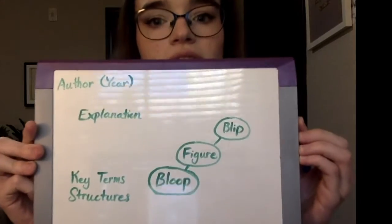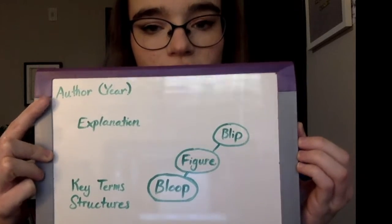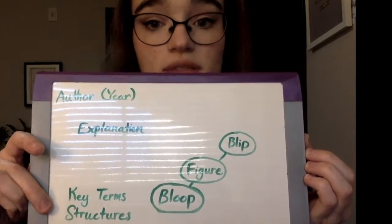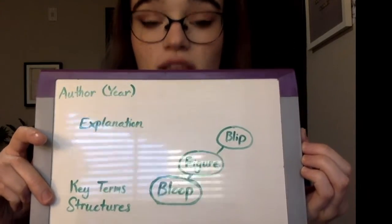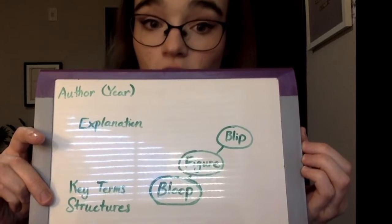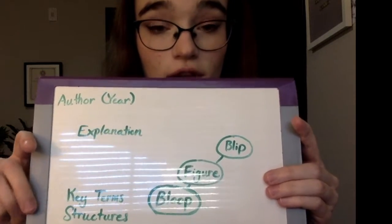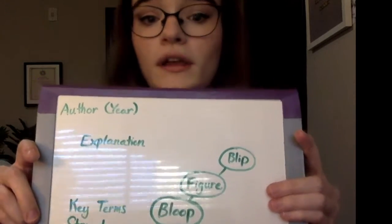It will look something like this, with a narrative citation, an explanation, some key terms and structures taken from the article, and a figure on the other side of the board. If the project is very lengthy, I will probably do the explanation on the whiteboard first, and then a following figure.